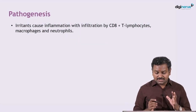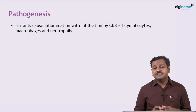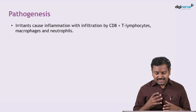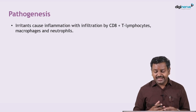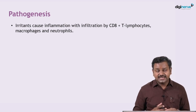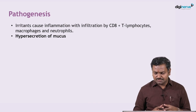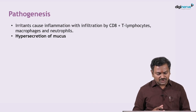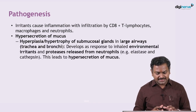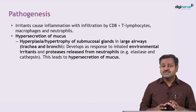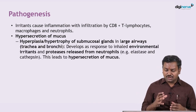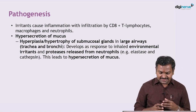The irritants which cause inflammation produce an infiltration of CD8 type lymphocytes, macrophages, and neutrophils. There is hypersecretion of mucus because of the hyperplasia of the submucosal goblet cells in the larger airways, and because of them the secretions will accumulate inside.